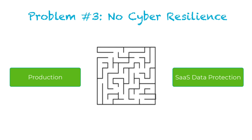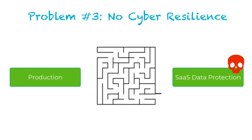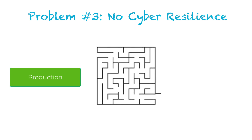And finally, legacy approaches often expose backups via standard network protocols. We all know attackers spend countless days in discovery, exploring and moving laterally, attempting to do as much damage as they can. If backups are exposed and they're not immutable, consider your last line of defense compromised and useless.